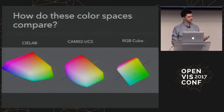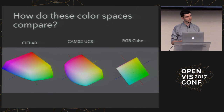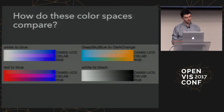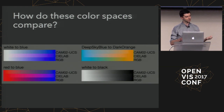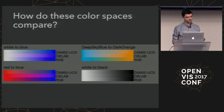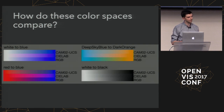If you look at lab space, it has a big skew downward to the right, which is why Colorgorical was artificially running out of blues — all the blues were being shifted into that bottom right quadrant where they should be more central or bottom left. A video shows approximate volumes of each color space. CAMO2 UCS gives a more spherical shape than CIE lab, getting at the ideal of Cartesian grid spatiality in a uniform color space.